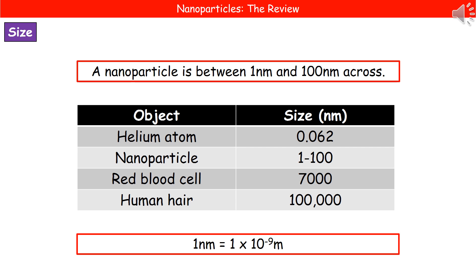Welcome to our review on nanoparticles. The first thing we need to know is the size. When we're talking about a nanoparticle, we're talking about something that's absolutely tiny — between one nanometer and 100 nanometers across. Just to give you an idea of how tiny that is, a single human hair has a diameter of approximately 100,000 nanometers. So if we're putting it into standard form, one nanometer is the same as 1 times 10 to the minus 9 meters.